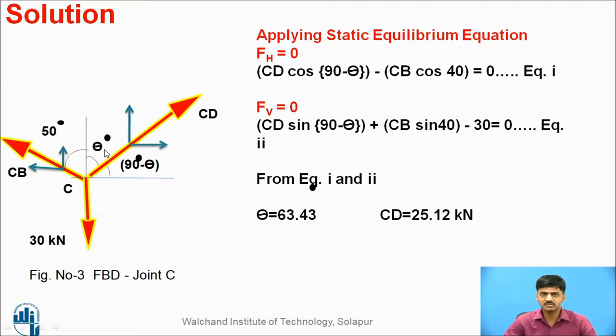Now consider joint C. At this joint, we apply the static equilibrium equations. All horizontal forces: CD is inclined, CB is inclined, so mention the components. One is this component, second is this one. With respect to x-axis, you consider here.